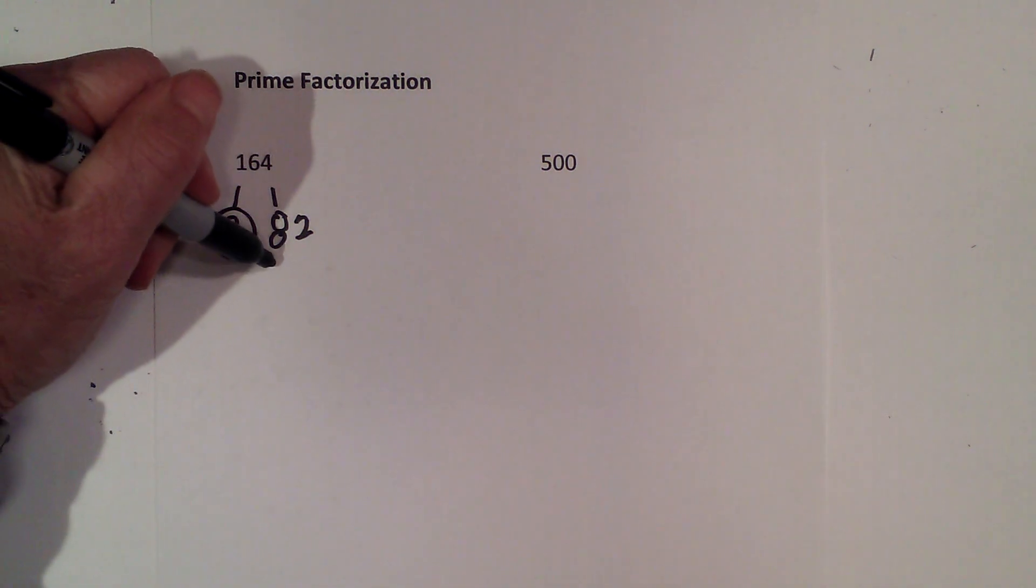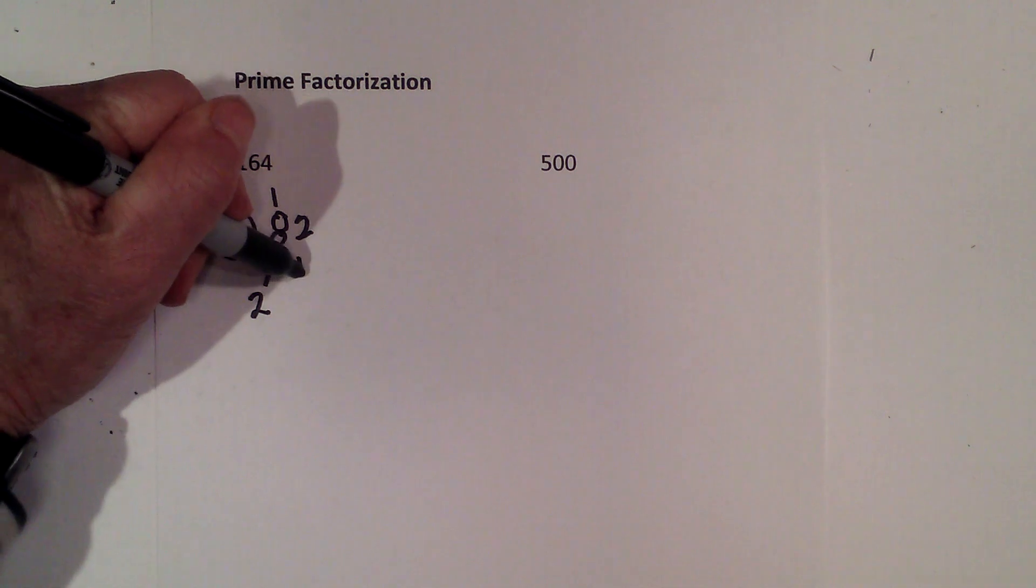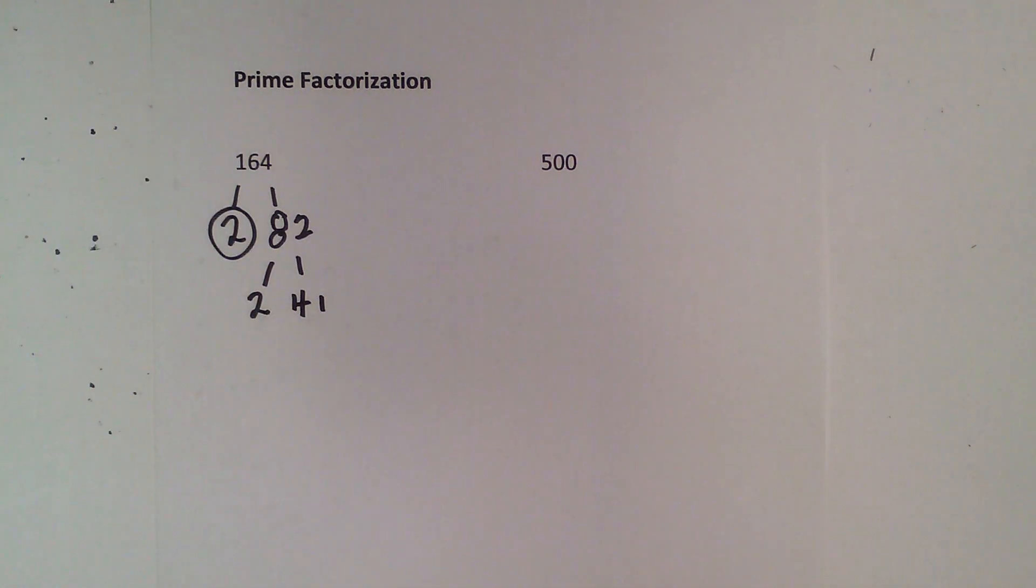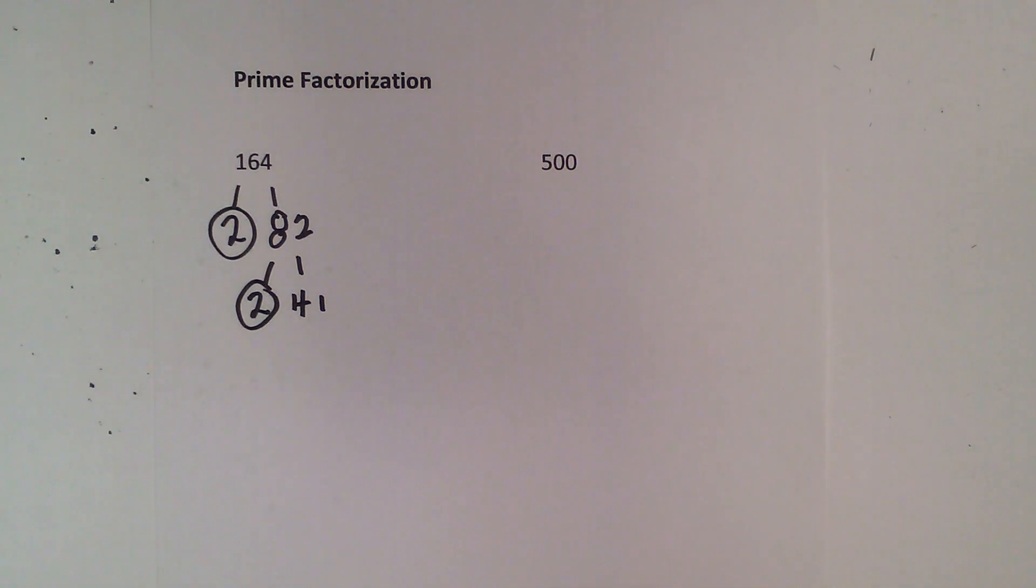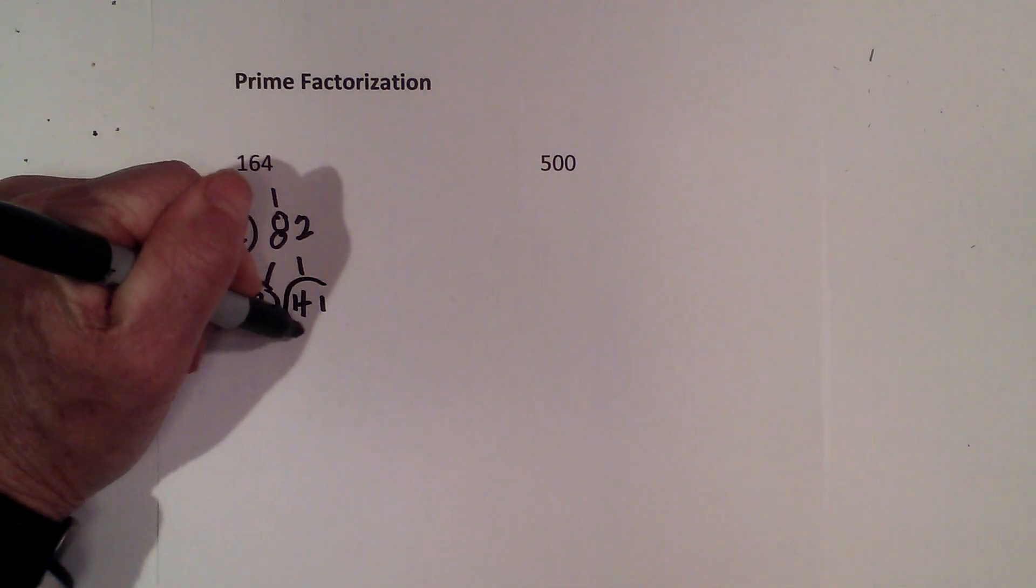First, we have 2 times 82. I will circle the 2 because it is prime. Next, 2 times 41 equals 82. I will circle the 2 because it is prime, and 41 is prime also.